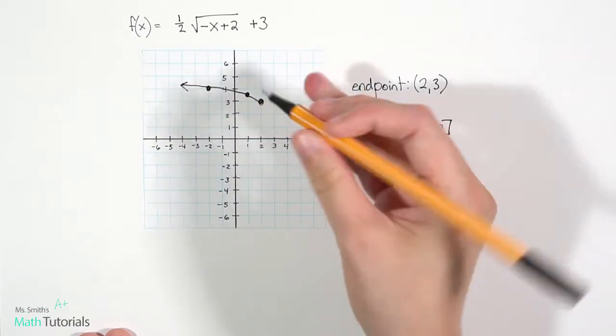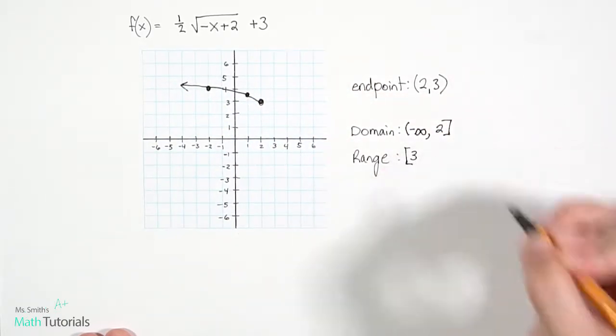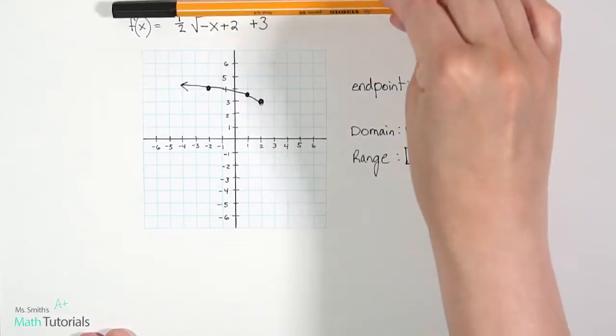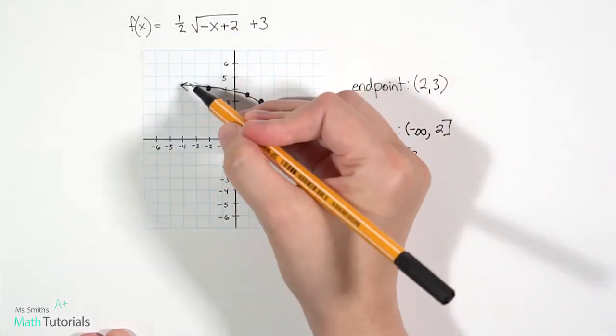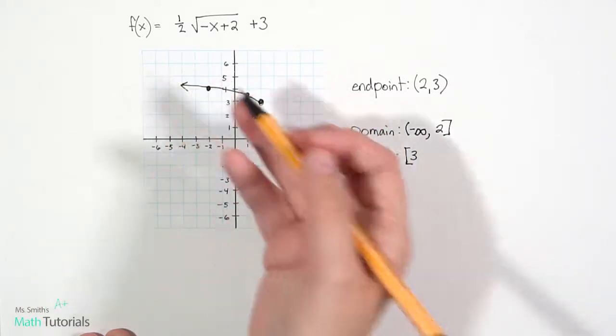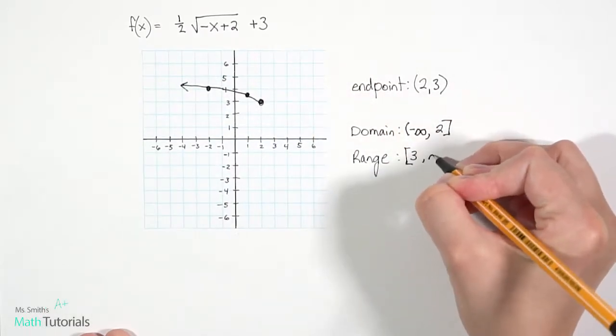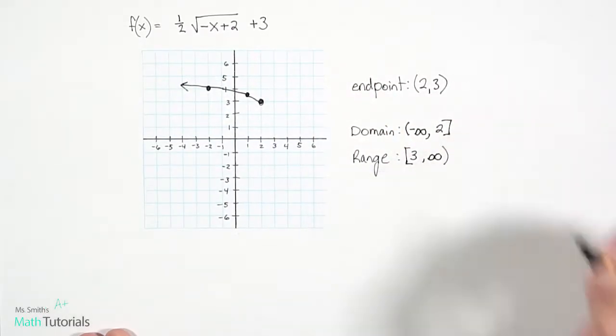Range. When I come in from the bottom, I hit right at positive 3. It's a solid point. So it gets a bracket. And when I come from top down, I hit an arrow. So even though that arrow looks like it's going to the side, it's also moving up slowly, but it is moving up for infinity. So we'd call it positive infinity because it's on the right.